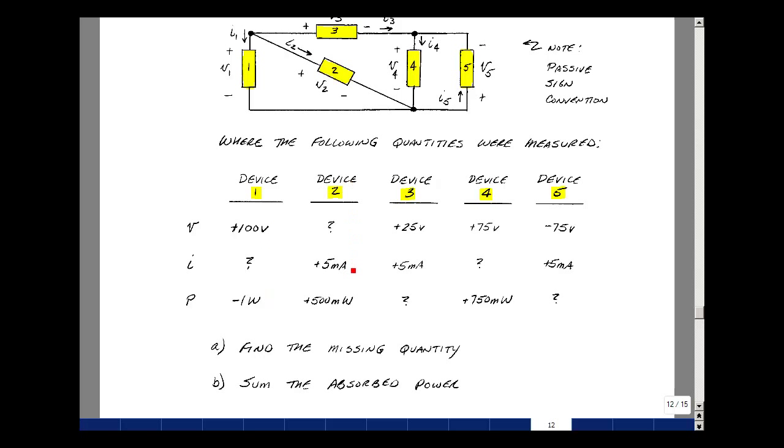For device number two, its current and its power absorbed. For device number three, its voltage and current. For device number four, its voltage and power absorbed. And for device number five, its voltage and current.